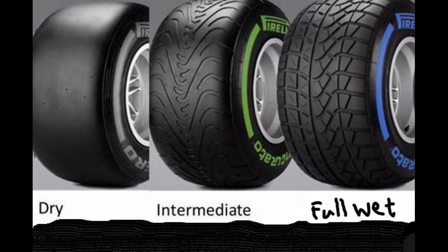If a driver gets caught out with slick tires on a wet track, the water will quickly not be able to move out from underneath the tire and the car will simply glide on top of it, causing it to aquaplane. F1 wet tires, on the other hand, can disperse around 85 liters of water per second each at 186 miles per hour.